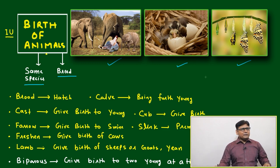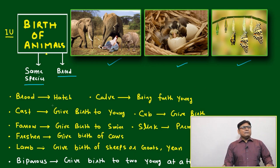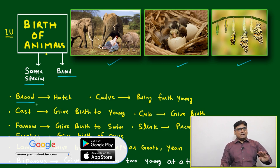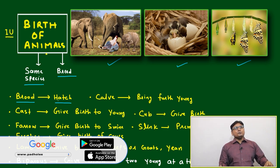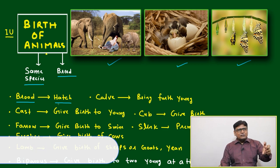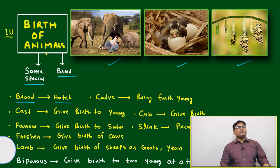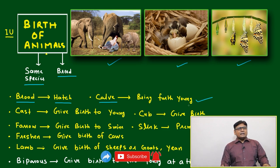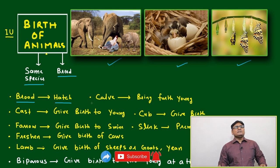There are multiple ways. A few words we have to remember: 'brood' means hatch — after hatching, the animal comes out, and that kind of birth is called brood. 'Call' means bring forth young.